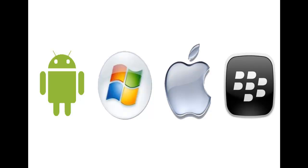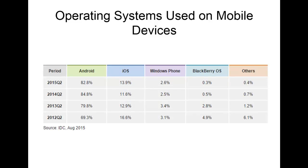There are four main operating systems for mobile devices: Android, Windows, Apple, and still lingering around in some businesses, Blackberry. Current data shows that Android simply devours the rest of them — it is the market standard. Overall, the two most prolific mobile operating systems in the world are Google's Android and Apple's iOS. Windows has more usage than Blackberry, as Blackberry is pretty much on its way out, especially in enterprise environments.